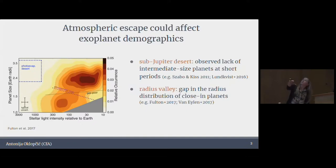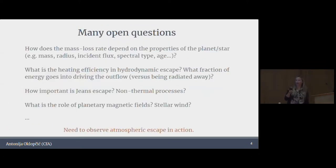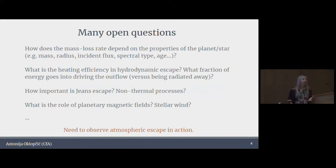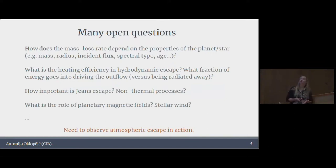This sub-Jupiter desert and this radius valley — one way to create these features is through atmospheric escape. But as James pointed out, there are a lot of things we don't understand yet about atmospheric escape, and a lot of that is because we have not observed it in action in large samples of exoplanets. Things like: how does mass flow rate depend on various properties of the planet and its host star — mass, radius, incident flux at different wavelengths, age, spectral type, and so on.